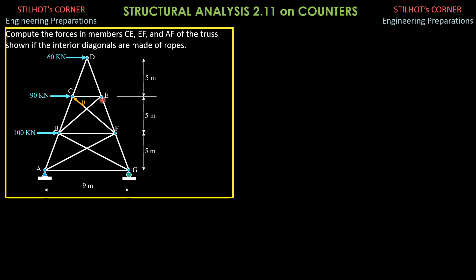If that is zero, then BE, the other interior diagonal, should be in tension. But we are interested only of member CE. So we draw the free body diagram of joint C, and it is as shown. Then we sum up forces along axis U, where U is the axis where the other two members, BC and CD, are perpendicular to that axis.